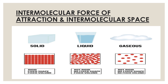In liquid, the intermolecular force of attraction is not very strong and the intermolecular space is larger. Because of that, liquid is not very rigid — it does not have a fixed shape, but it does have a fixed volume. For example, if you take 100 ml of water, it will remain 100 ml. If you transfer it to another beaker, it will still be 100 ml.